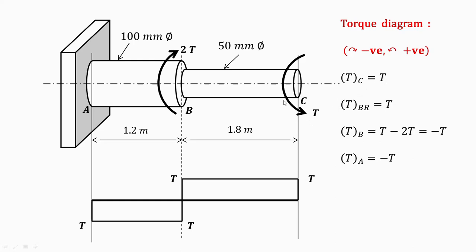We have written T at point C. Just to the right of B, there is no other torque acting between C and B, so whatever torque exists at point C, the same will be acting just to the right of B. But exactly at point B there is a clockwise torque of 2T, so the value becomes T minus 2T, which equals minus T. Between B and A there is no other torque, so at point A the torque is also minus T. The minus sign indicates it is a clockwise torque — this is the reactive torque at point A with magnitude minus T.